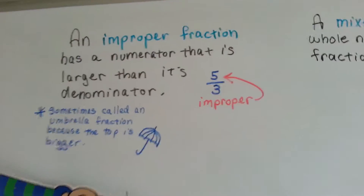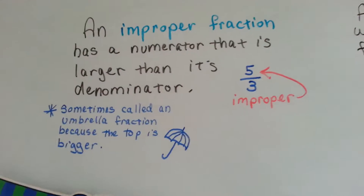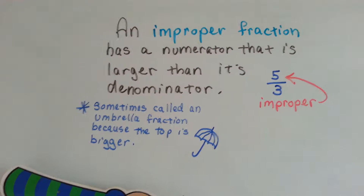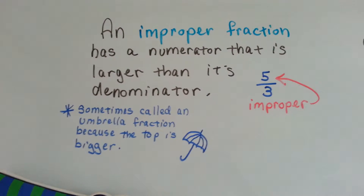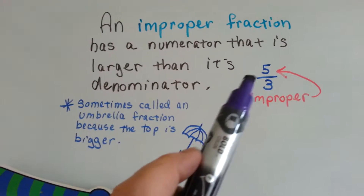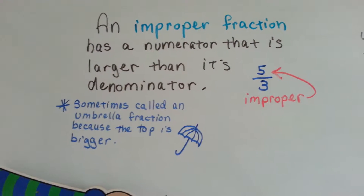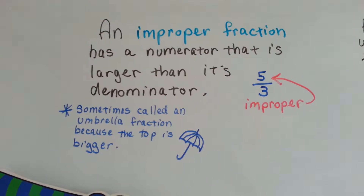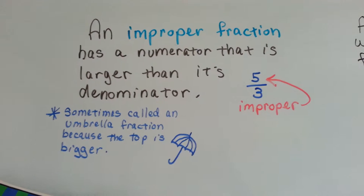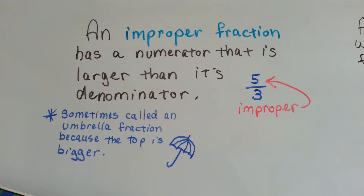Remember that an improper fraction has a numerator that is larger than its denominator. 5 thirds is improper because the 5 is bigger than the 3. Sometimes they're called umbrella fractions because the top is bigger.